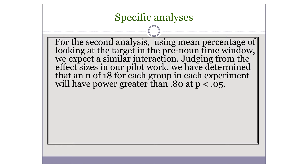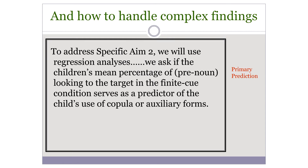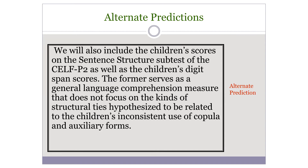For the second analysis, using mean percentage of looking at the target in the pre-noun time window, we expect a similar interaction. Judging from the effect sizes in our pilot group, we have determined that an N of 18 for each group in each experiment provides sufficient power. Now the last piece: complex findings and caveats. He has a very sophisticated, precise way of saying 'however, I might be wrong' — here are alternate predictions, pitfalls, caveats, in such a slick way.